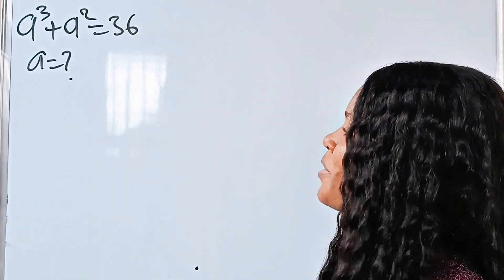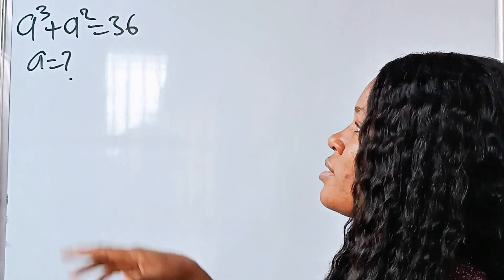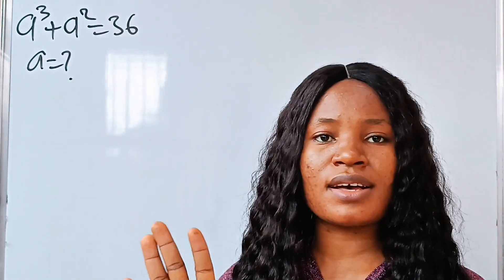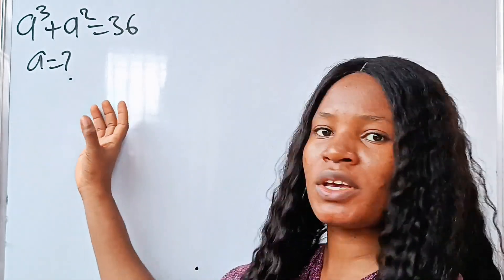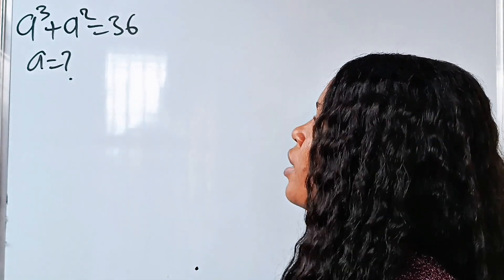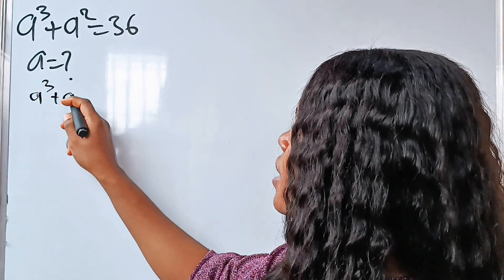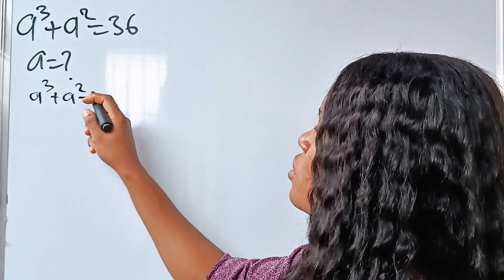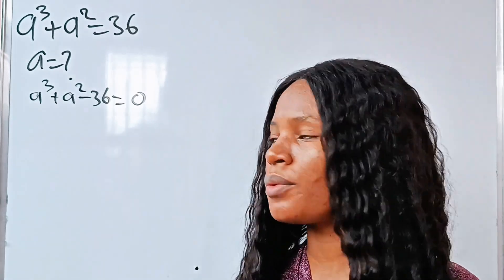Shall we solve this together? We are asked to solve for the value of a. We have that a to the power of 3 plus a squared, minus 36, is equal to zero.